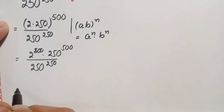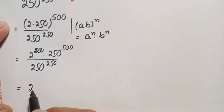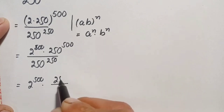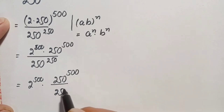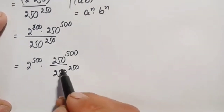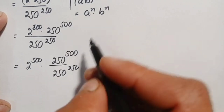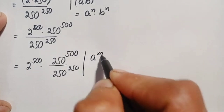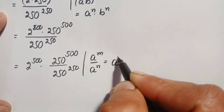Next, we separate the expression. We have 2 raised to power 500 times 250 raised to power 500, divided by 250 raised to power 250. Since these two numbers share the same base, we apply the same-base exponential identity: a raised to power m divided by a raised to power n equals a raised to power m minus n.